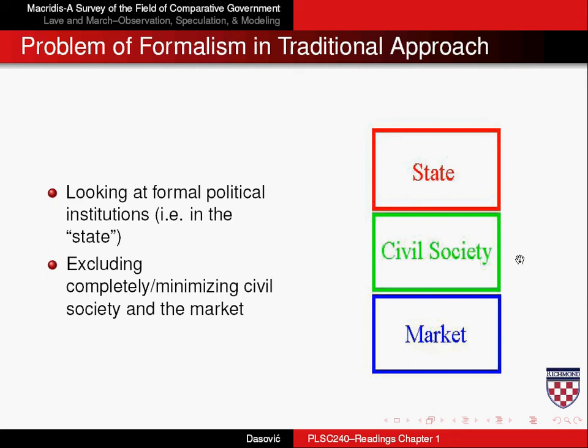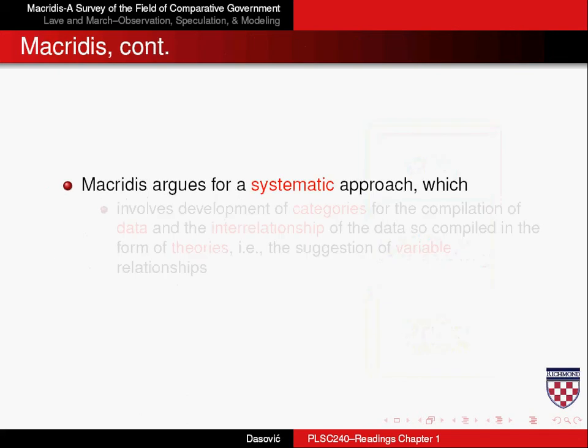Now that we've looked at some of the problems that Macritus outlined — the problem of formalism in the traditional approach — let's try to understand what Macritus wants comparative politics to look like. He argues, essentially, for a systematic approach. Another way of thinking about that is a scientific approach, where we want to understand the systematic relationship between and amongst certain political phenomena. By systematic, what we mean is that relationships vary amongst political phenomena, but they vary in predictable ways, so we can predict or understand them quite well.